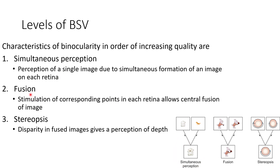Level 2 is fusion. This is the stimulation of corresponding points in each retina which allows central fusion of the image. The third level is stereopsis, where disparity in fused images gives a perception of depth.